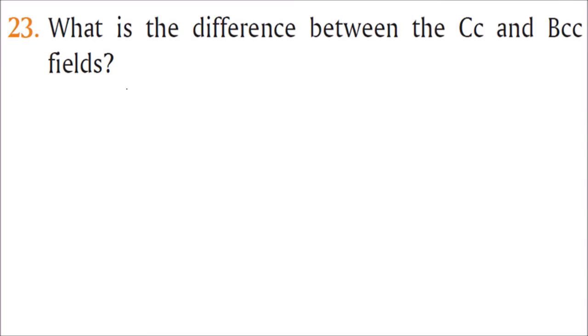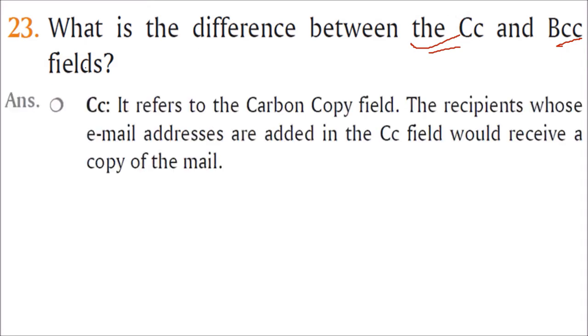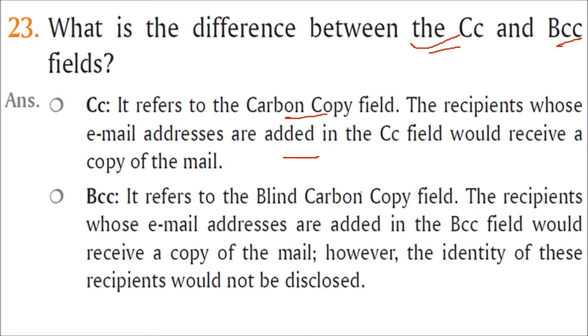What is the difference between the CC and BCC field? CC is carbon copy, BCC is blind carbon copy. This will be used in email. When you send email and you want others to also see to whom all you have sent, that is carbon copy. The recipient whose email addresses are added to the CC field would receive a copy of the mail. Same as CC, but in BCC the identity of the recipient will not be disclosed.